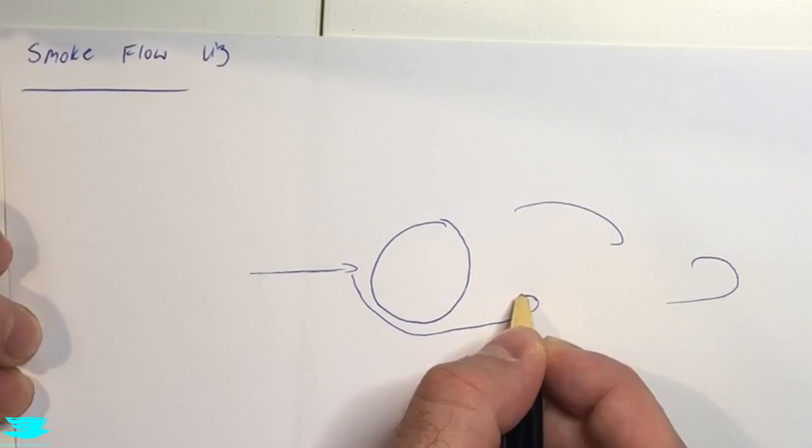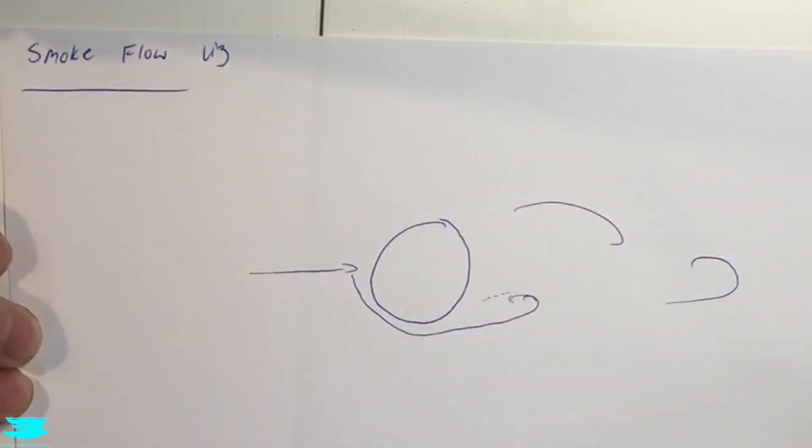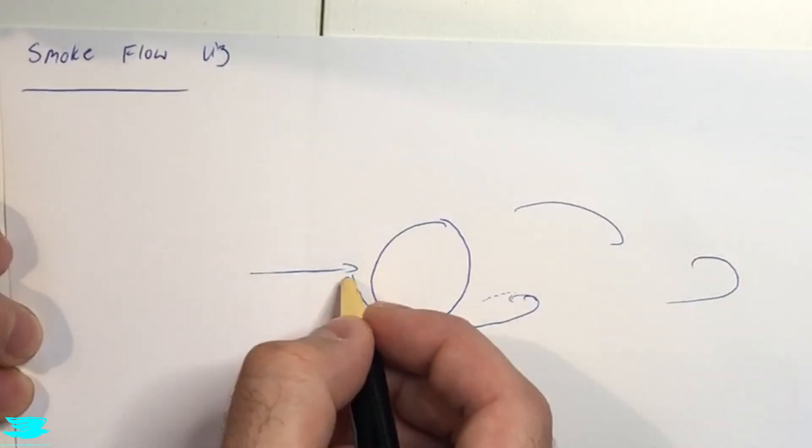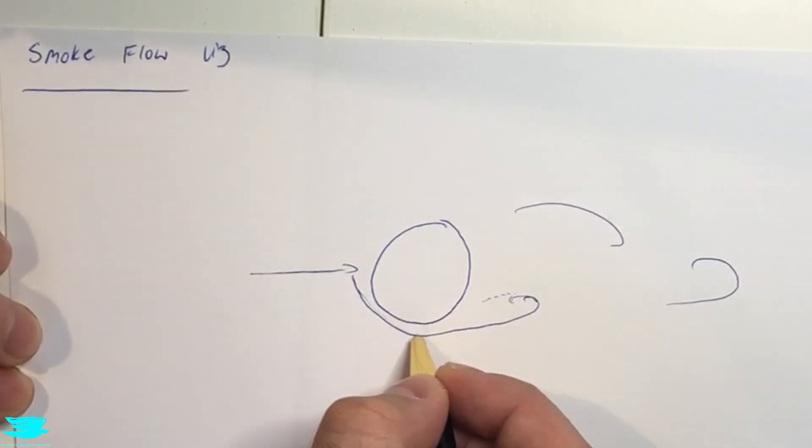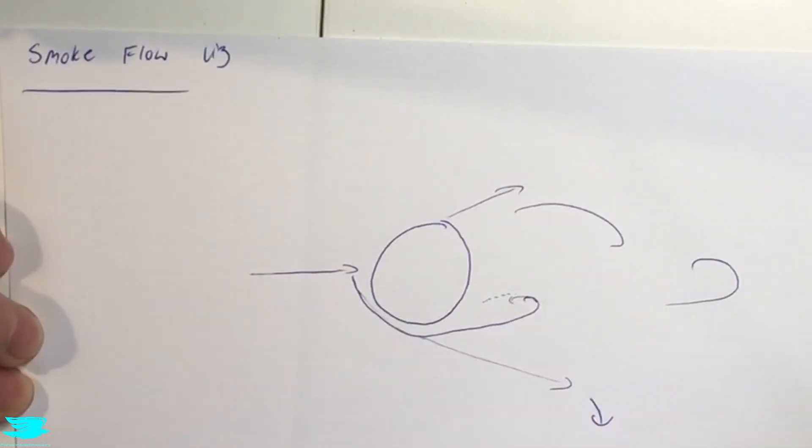You can see there's some flow being circled back around here into this wake. These small particles will come in here. Larger particles won't. They'll come around here and they'll just fall out of the air and go on another path, and often they'll be affected by gravity even more, so they'll also drop.